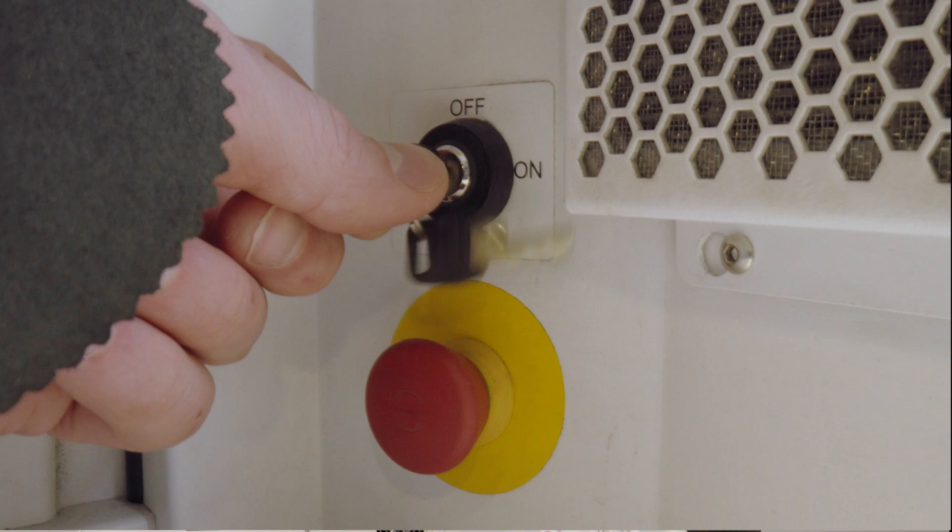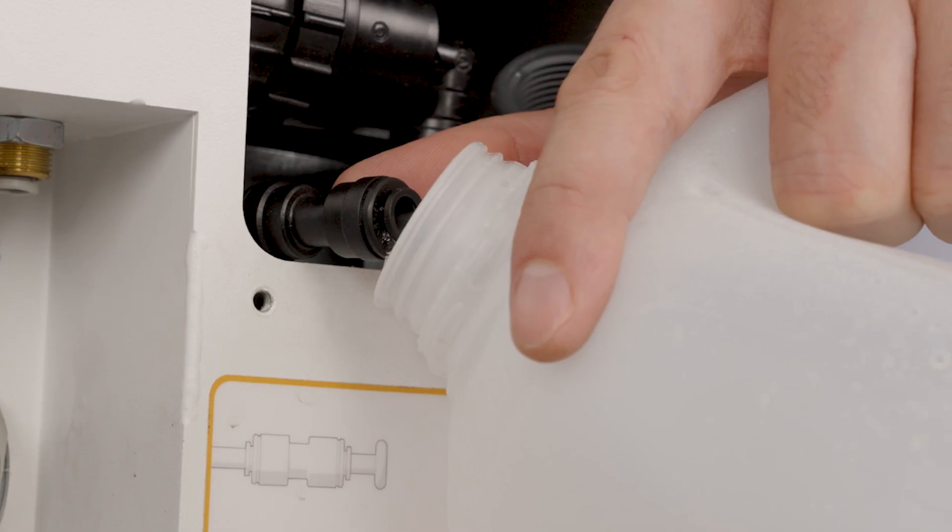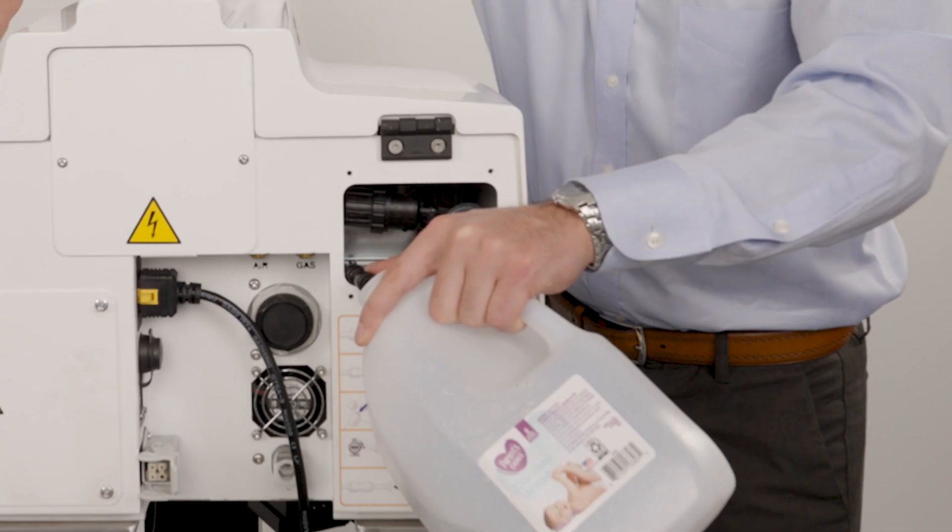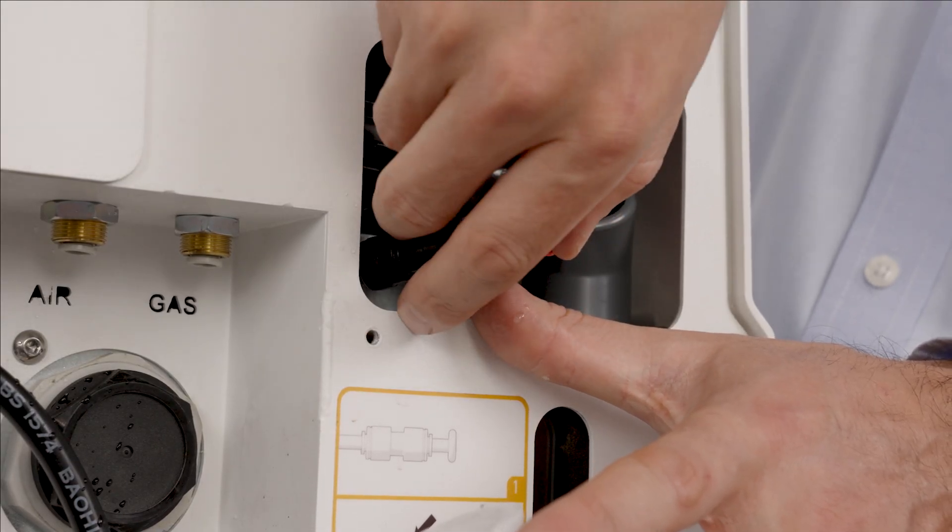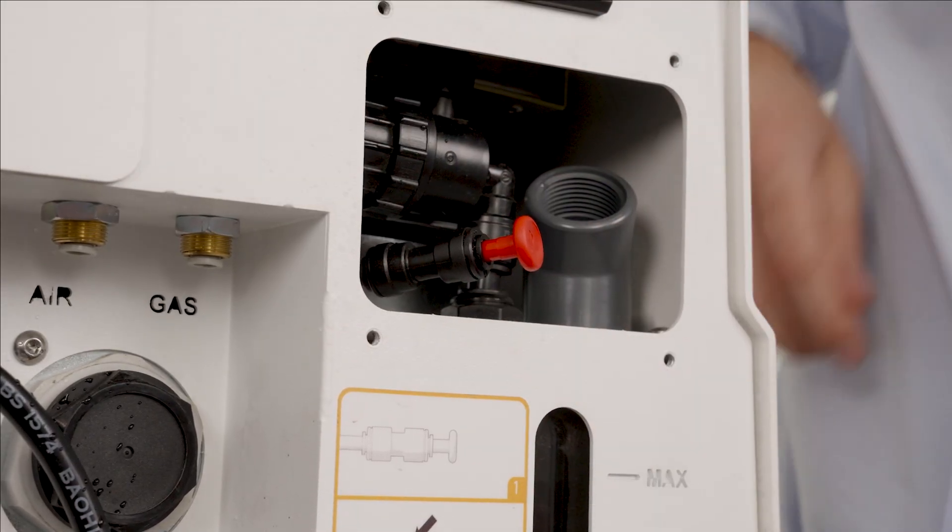Turn the key switch off and the water is going to keep ejecting for about five or six seconds and will stop on its own. Once it finishes go ahead and put the red cap back in and now we want to top off that water tank.